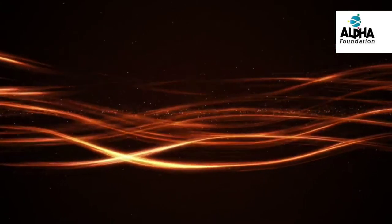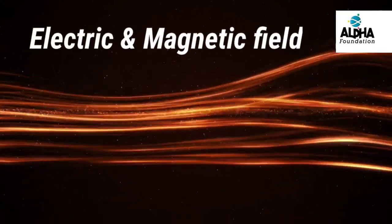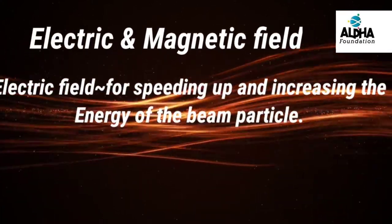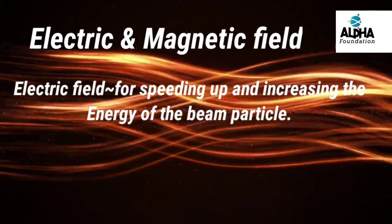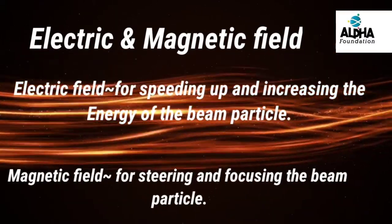A particle accelerator basically makes use of an electric and magnetic field. The electric field is for speeding up and increasing the energy of the particles, while the magnetic field is just to steer and focus the particles.